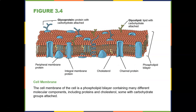Here's the cell membrane in a little more detail. There's the cholesterol, the channel proteins, the phospholipid bilayer, and an integral membrane protein. These proteins help certain things come in and out or carry out their own function. Then you have a glycolipid — a lipid with carbohydrates — and a glycoprotein, which is a protein with a carbohydrate attached. The cell membrane is a phospholipid bilayer containing many different molecular components, including proteins and cholesterol, some with carbohydrate groups attached.